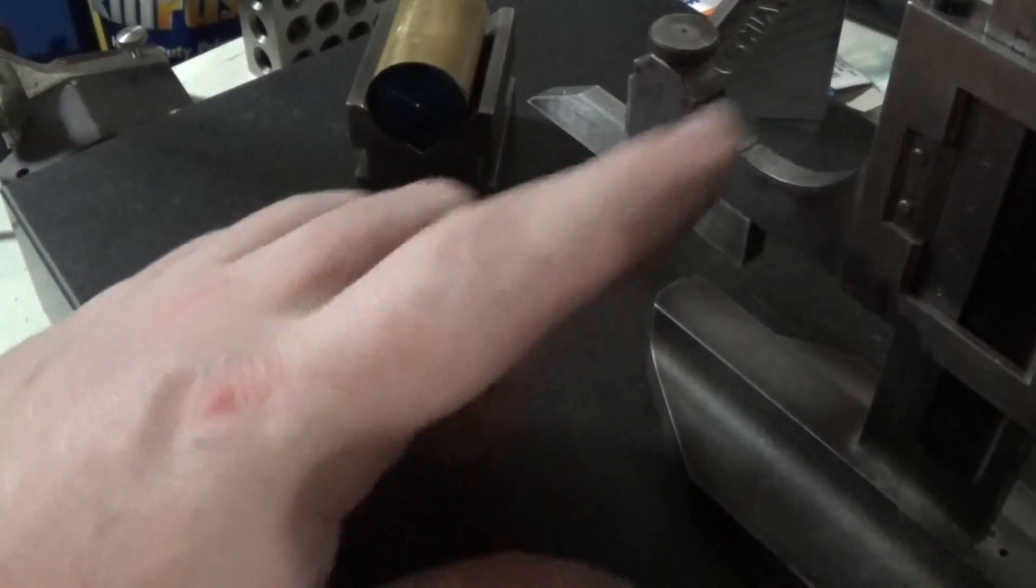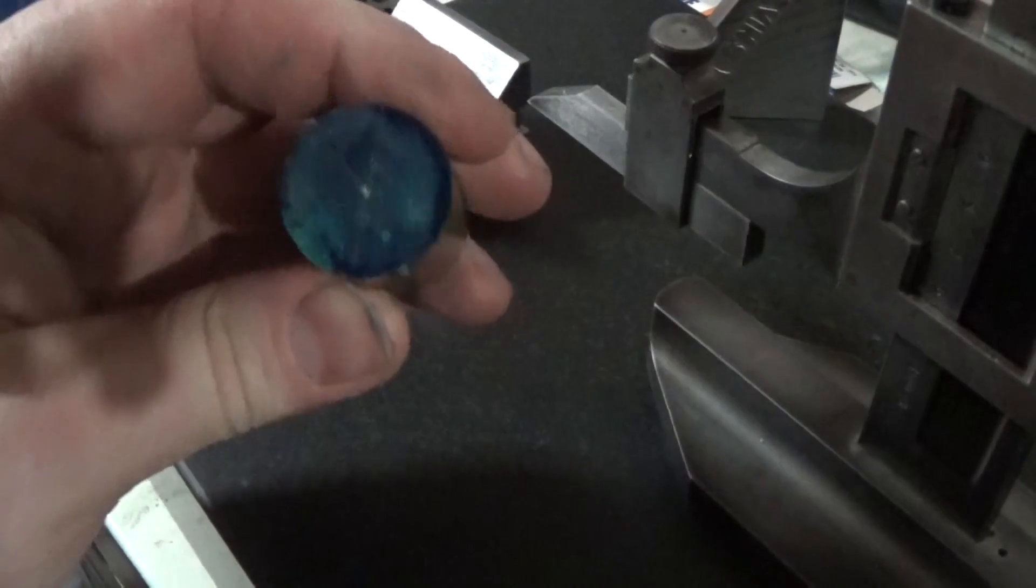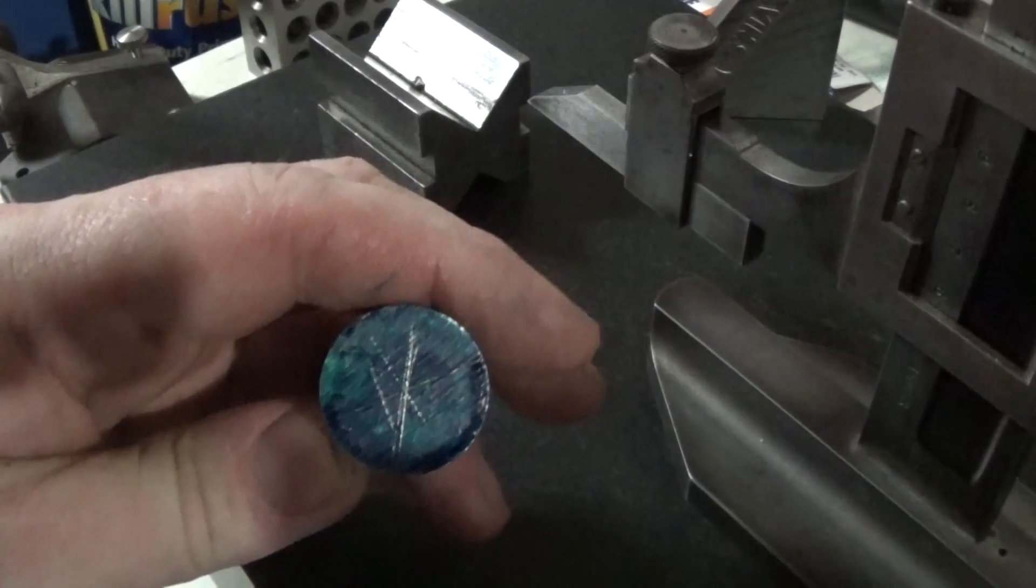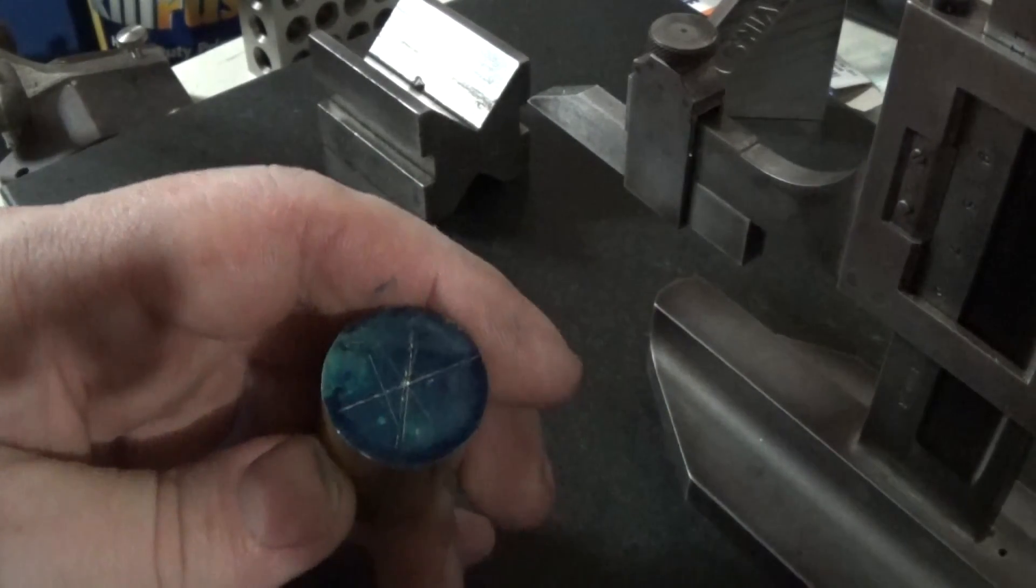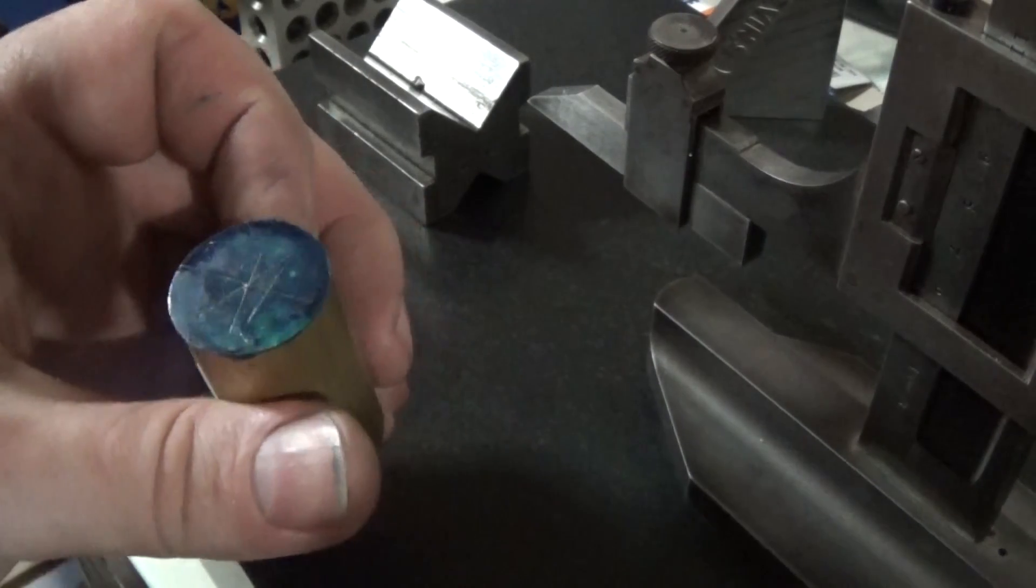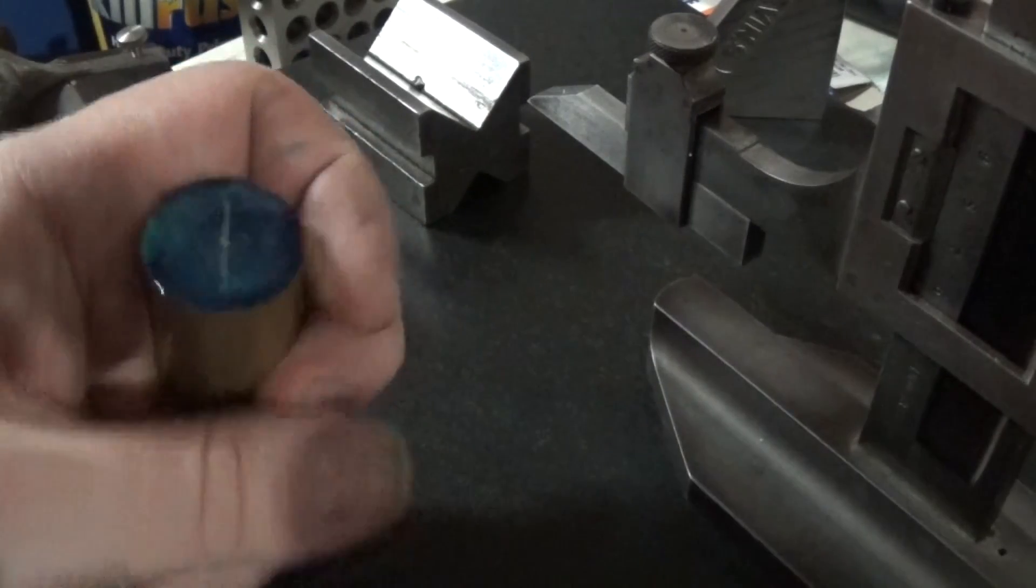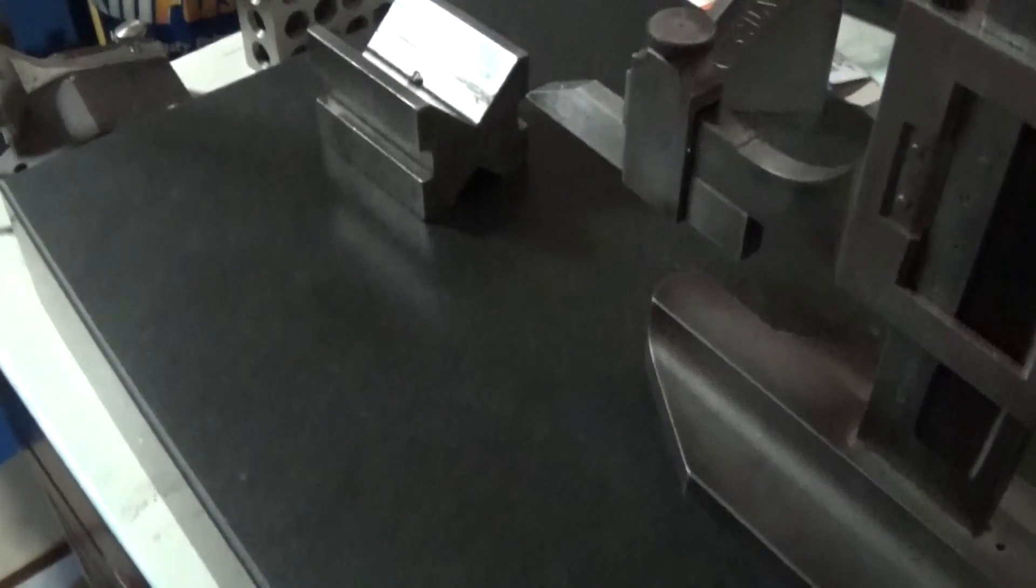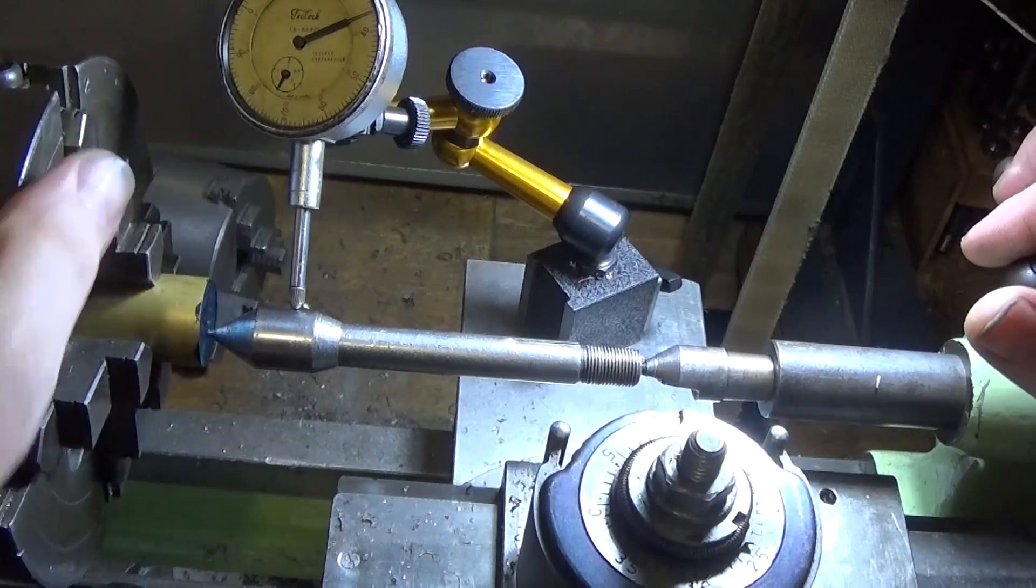I've adjusted this up the 140 thou that we need and I put another mark. So what we've got is another mark there, 140 thou from the center. We'll put a little center punch mark in there, and we're going to set him up on that center.